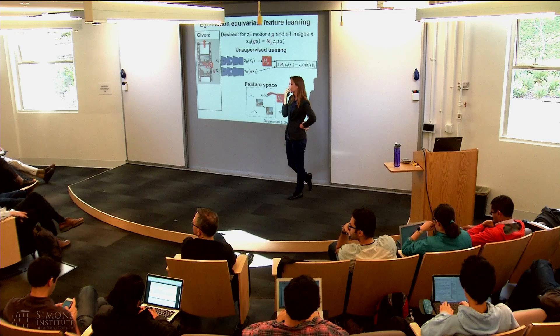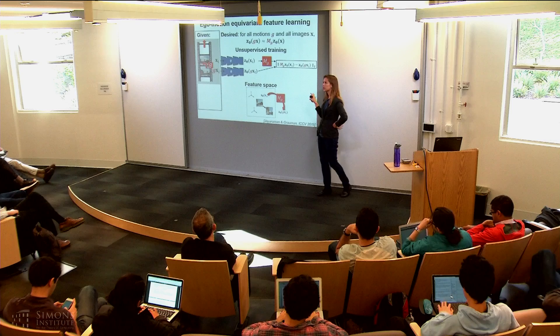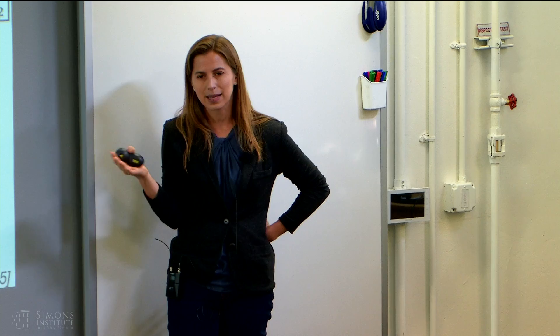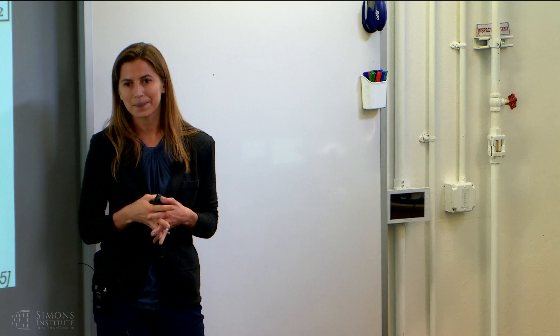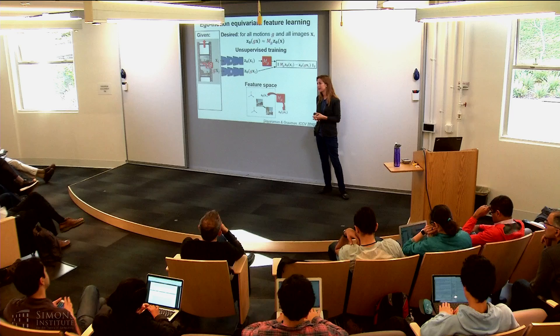Question: are there just three ego motions or many? They would be data dependent — I'm showing three in this cartoon. When we implement it with the dataset, it was about six. We discovered these ego motions by clustering the sensor readings into some discrete set. We've also played with using continuous motions without this discretization, but so far we're not getting better results. So sometimes you have a finite number of matrices M sub G, one for each ego motion.